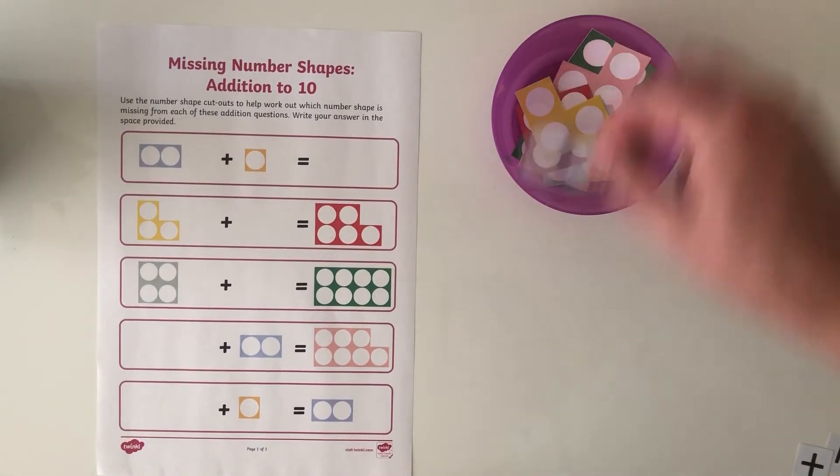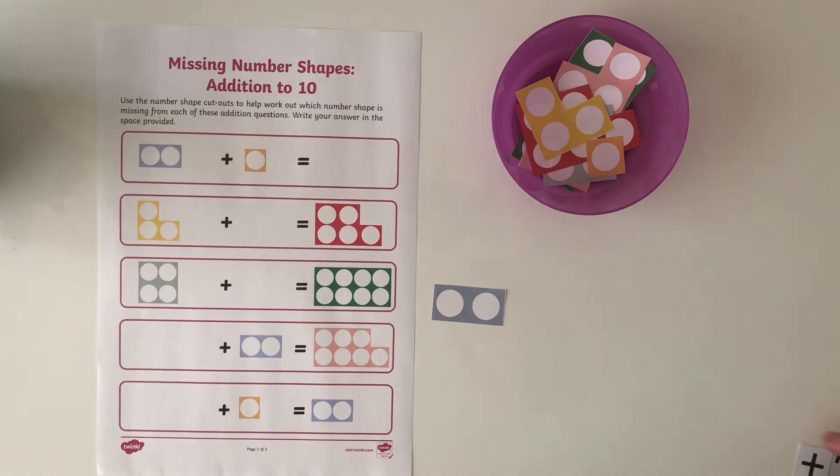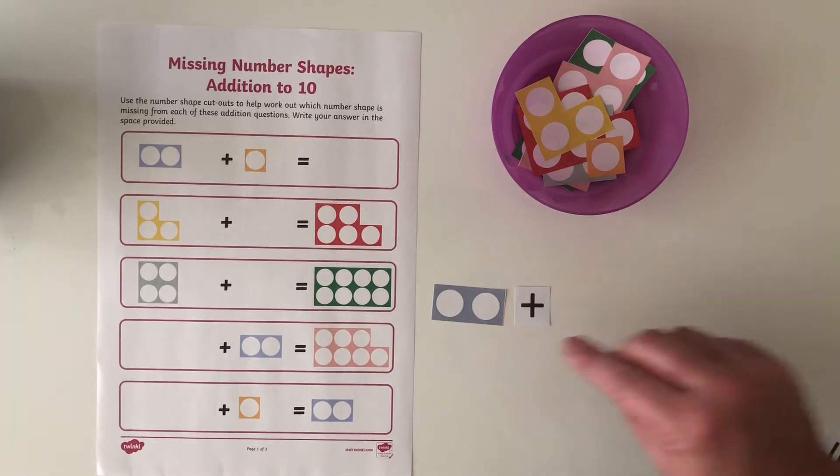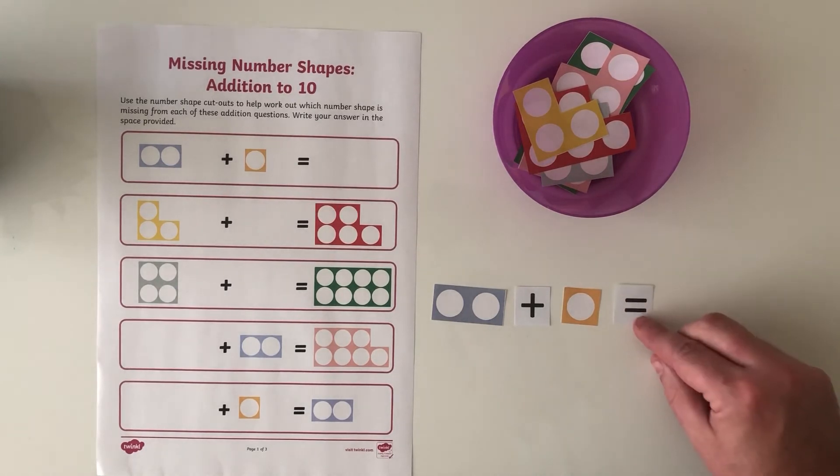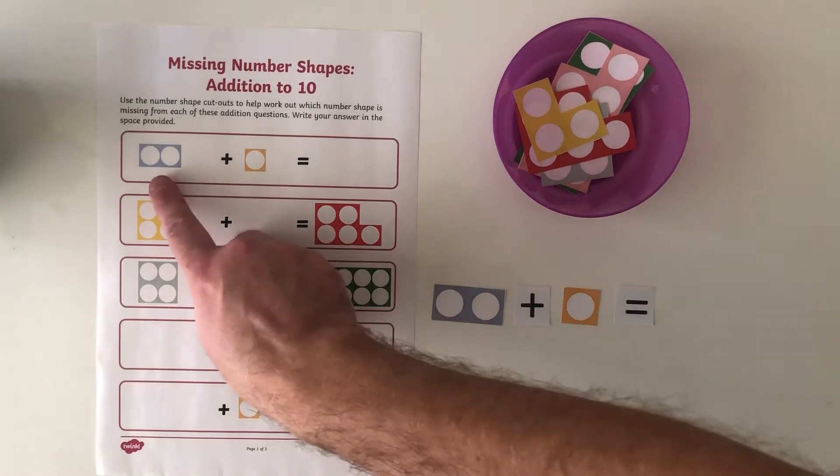I'm going to start by just building the number sentence. Here I've got an add sign and an equal sign. So I've built it just as it is on the sheet.